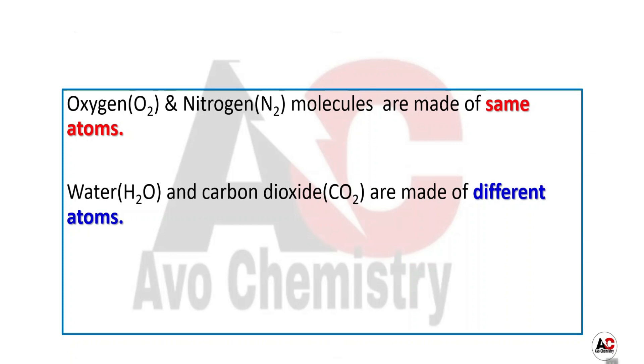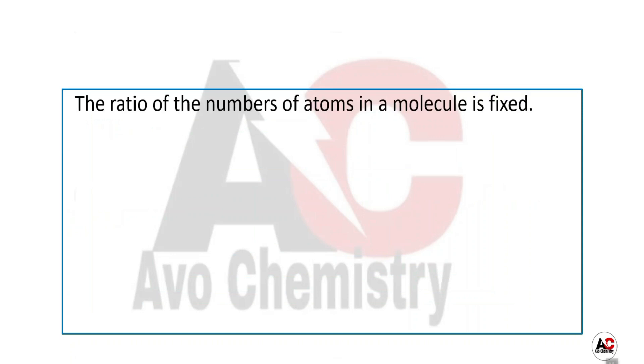The most important thing to remember: the ratio of the numbers of atoms in a molecule is fixed. For example, in every water molecule there are two hydrogen atoms and one oxygen atom.